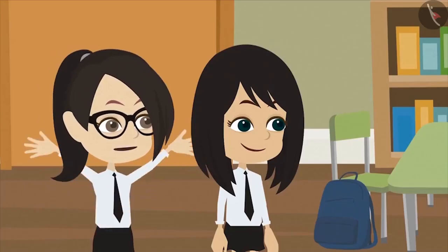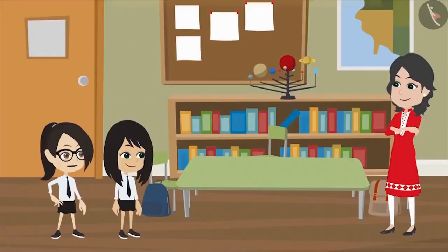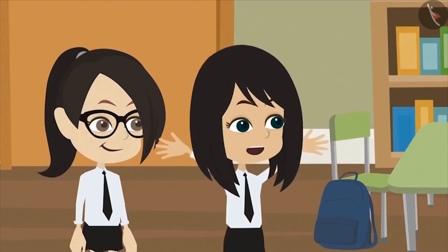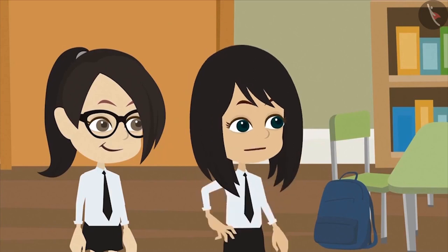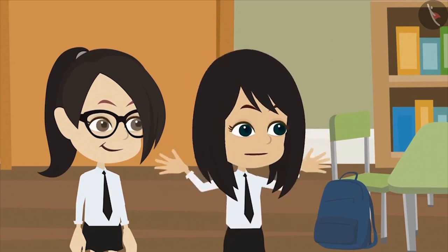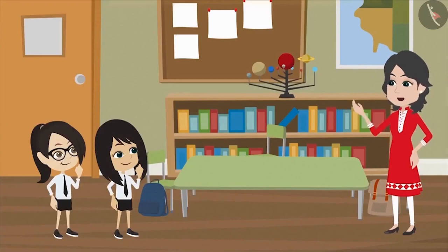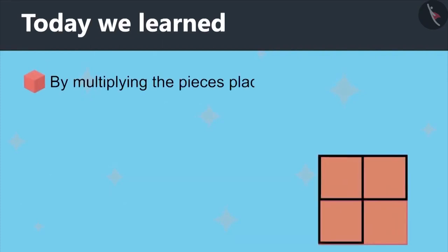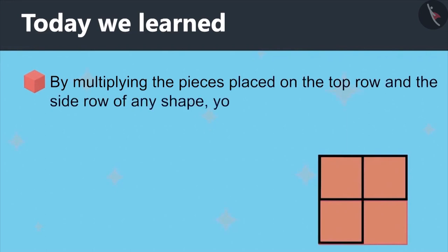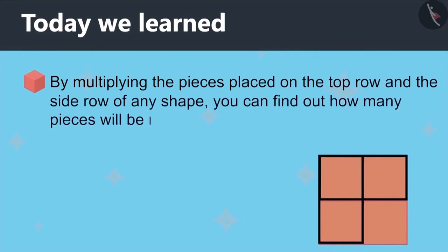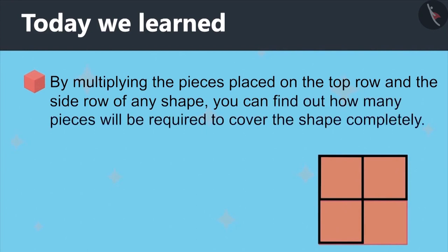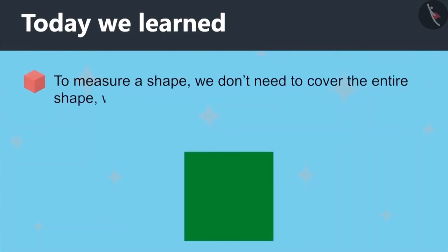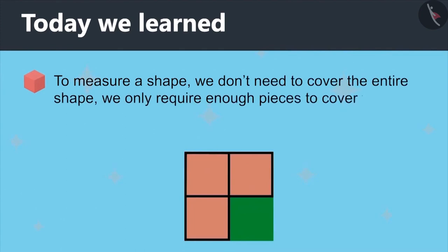This method is very good. If we know the number of pieces used in the top row and the side row, we can find the total pieces required — that is why you don't need more pieces for this. Today we learned that by multiplying the pieces placed on the top row and the side row of any shape, you can find how many pieces are required to cover it completely. To measure a shape, we only require enough pieces to cover the top and side edges.